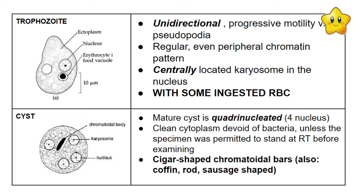For the trophozoite form, it is motile with a pseudopod and moves in a unidirectional manner. It has a regular, even peripheral chromatin pattern. The nucleus has a centrally located karyosome. One important characteristic: the trophozoite form of Entamoeba histolytica can ingest RBCs — red blood cells visible inside the amoeba under the microscope. This centrally located karyosome is a key identifying feature.